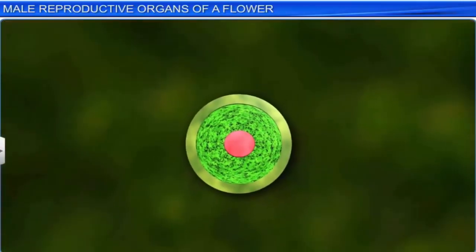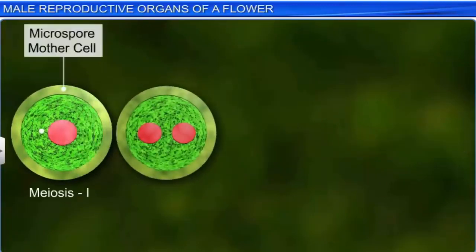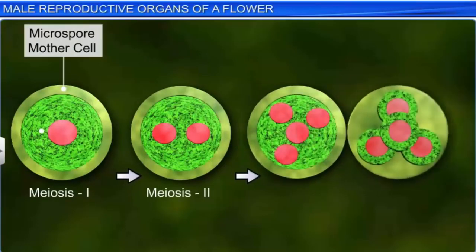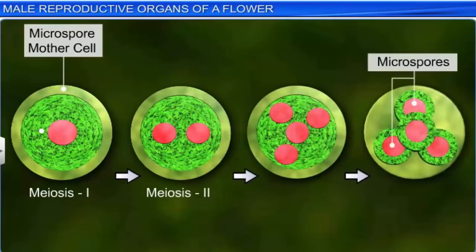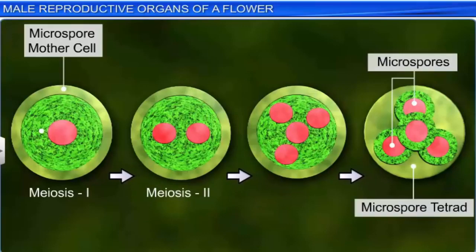These microspore mother cells divide meiotically to form haploid microspores, which arrange themselves in a tetrad. The process of formation of microspores meiotically from a microspore mother cell is called microsporogenesis.